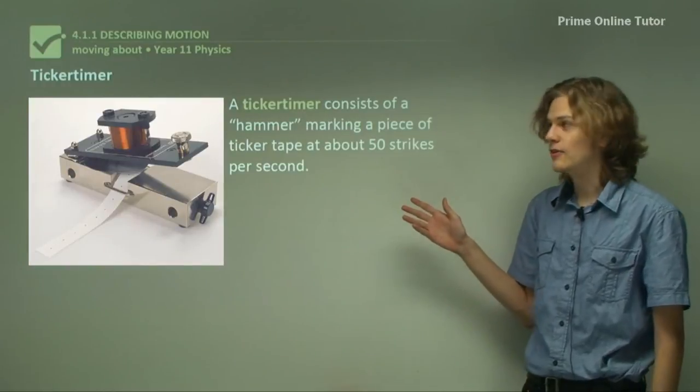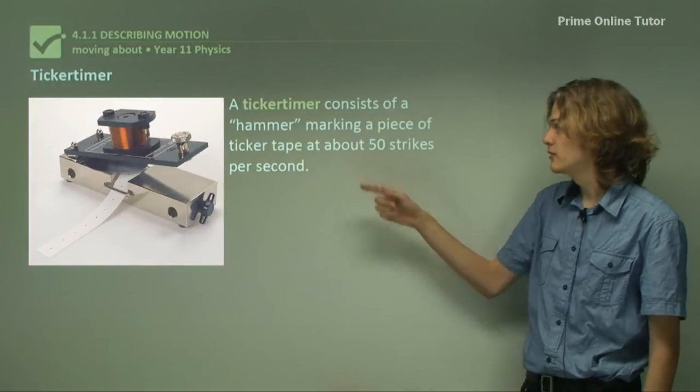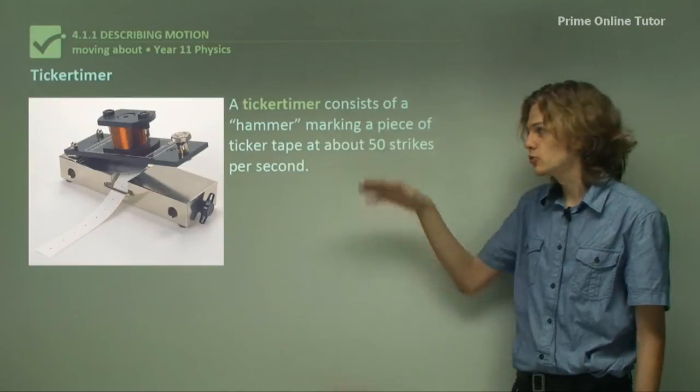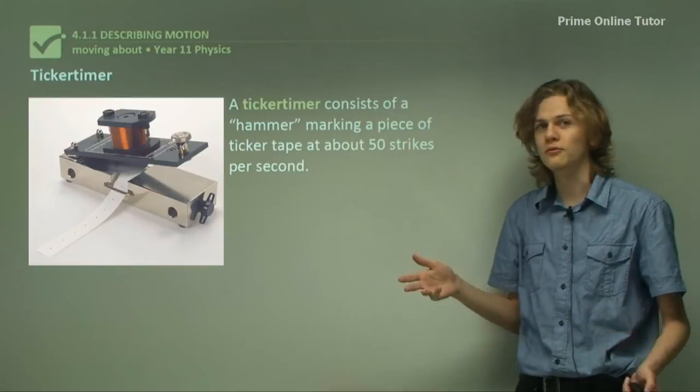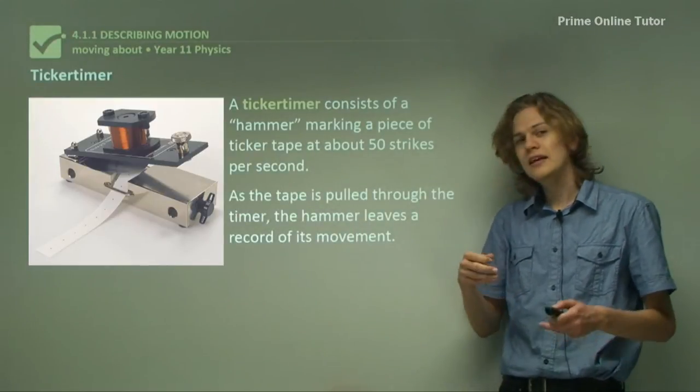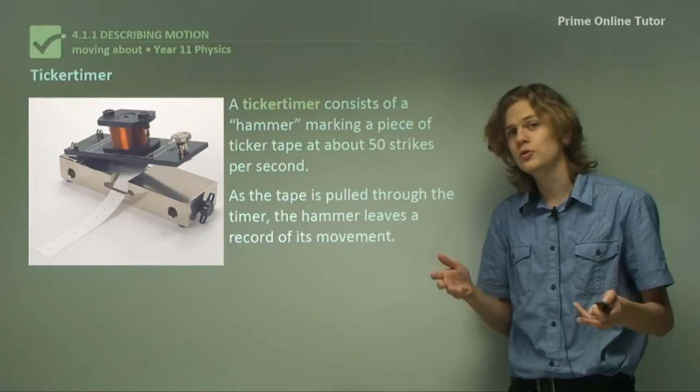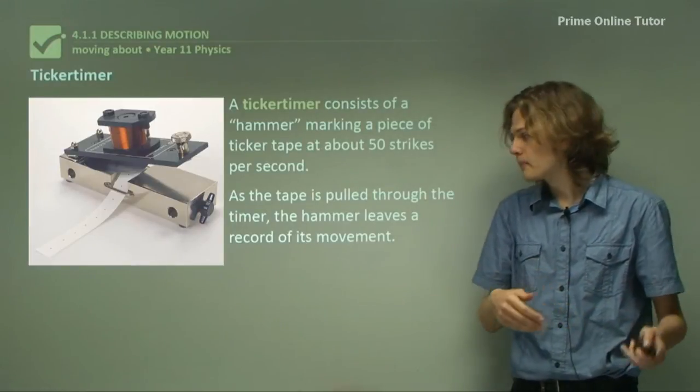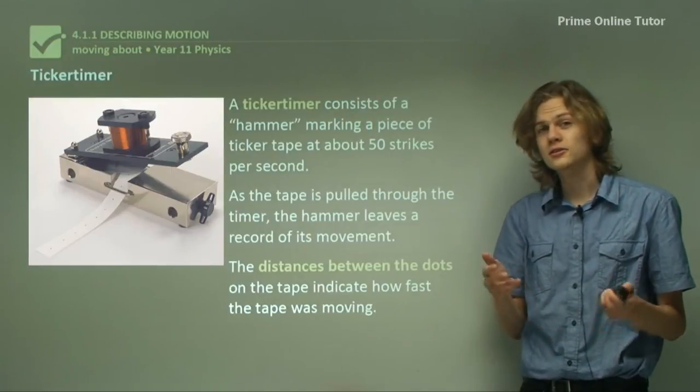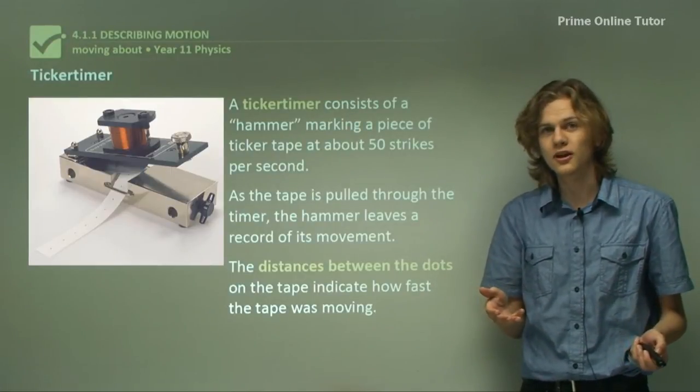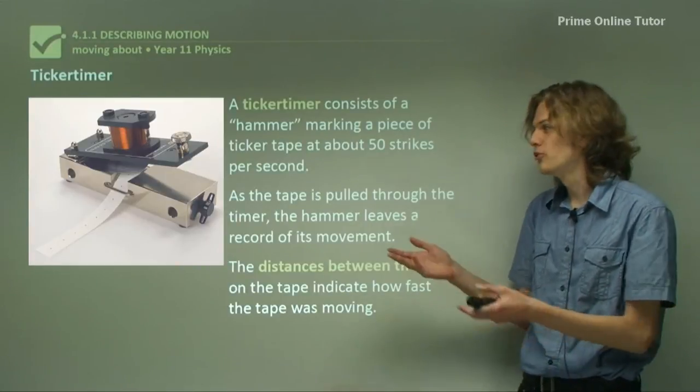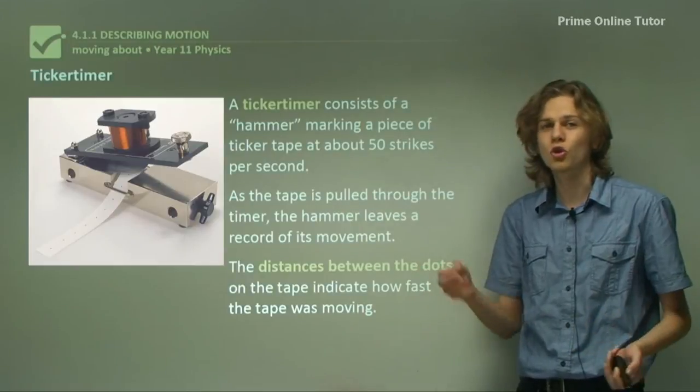Now, a ticker timer consists of a hammer, which we can see at the top of the picture here, marking a piece of ticker tape at about 50 strikes per second. So it just sort of goes up, down, and leaves a little dot every time it does. Now, as the tape is pulled through the ticker timer, the hammer leaves a sort of record of its movement by leaving dots on the paper. And the distance between the dots on the ticker tape indicate exactly how fast the tape was moving when it was moving through the ticker timer. This might be useful for measuring small things that can pull ticker tape through, like a toy car or an object falling off a table.